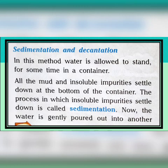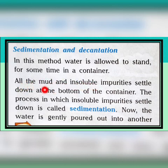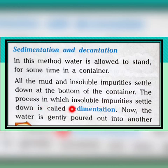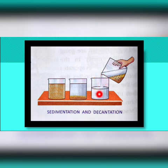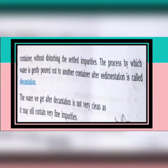The first process is sedimentation and decantation. In this method, first water is allowed to stand for some time in a container. By doing this, all the mud and insoluble impurities settle down at the bottom of the container. This process is called sedimentation — the process in which insoluble impurities settle down at the bottom.